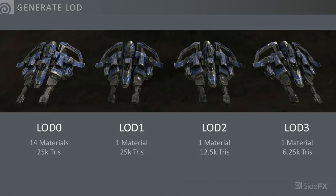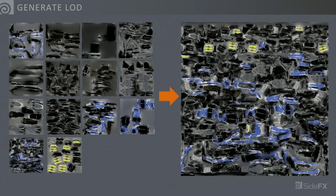The other thing is LOD generation — something all games need to deal with. We now have a tool to generate those LODs. We wrap around our powerful PolyReduce node, which keeps your silhouettes and detail where needed, to give you different LODs. We also do material consolidation: if you have multiple materials with multiple UV sets, we wrap those into a single UV space and rebake those textures. There's still more work we'd like to do on LOD generation to add more cool features over time.